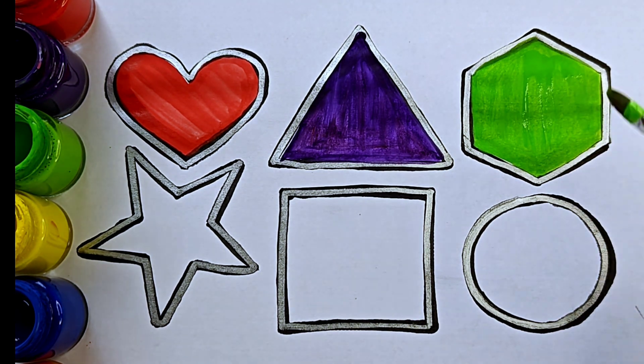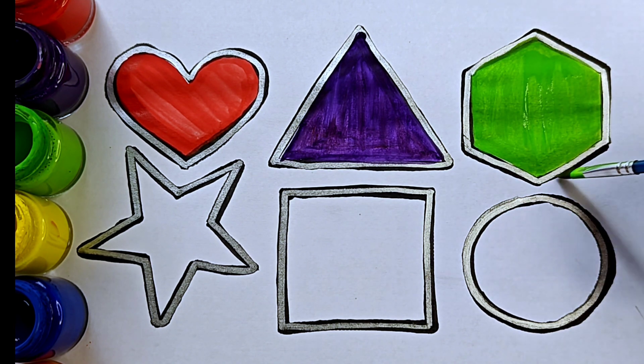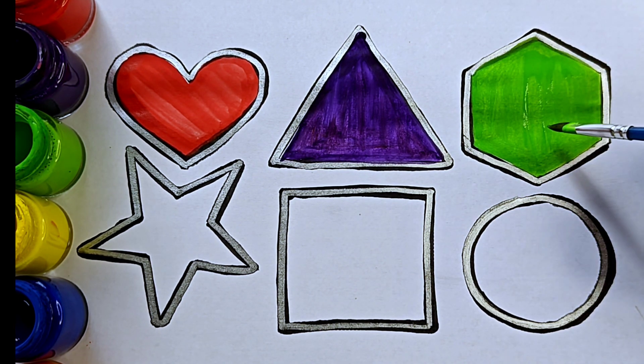This shape is hexagon. It has six sides, one, two, three, four, five, six. It is a 2D shape.